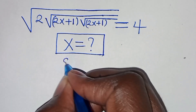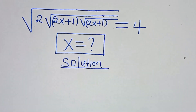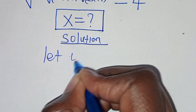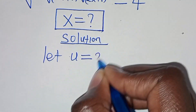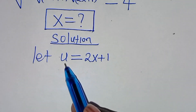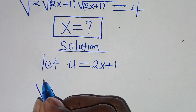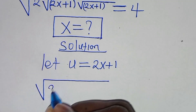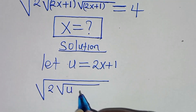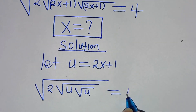Let's present a solution from here. The first thing to do here, we let u be equal to 2x plus 1. So let's substitute u in this square root equation. We have the square root of 2 multiplied by square root of u multiplied by square root of u. This is equal to 4.